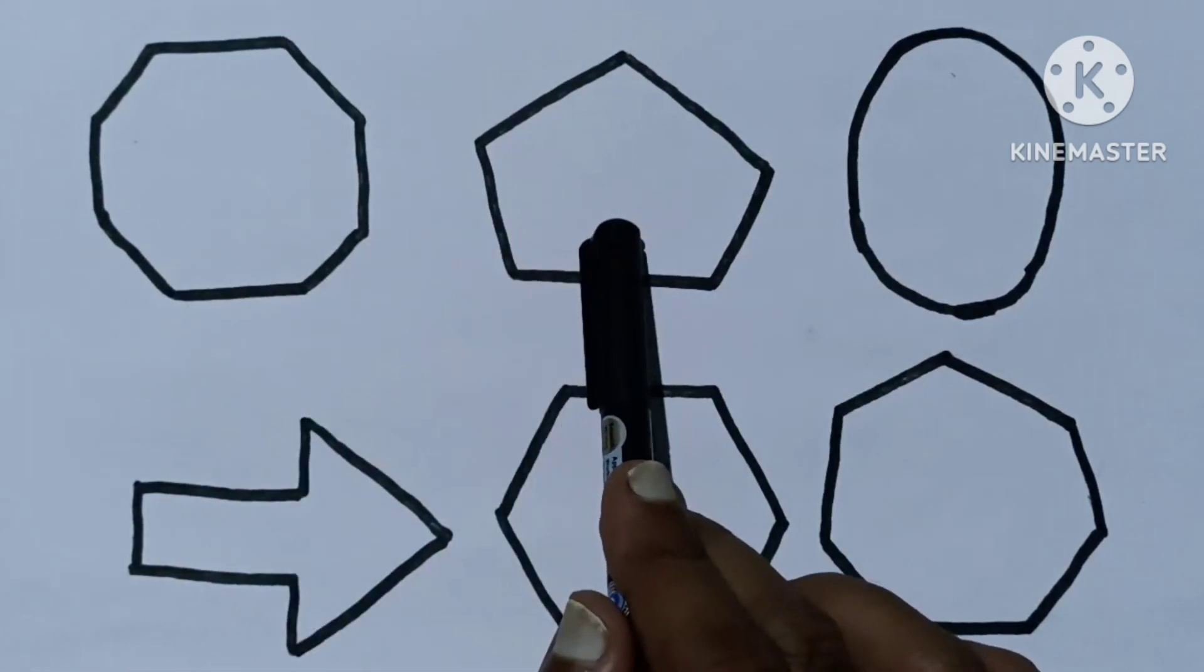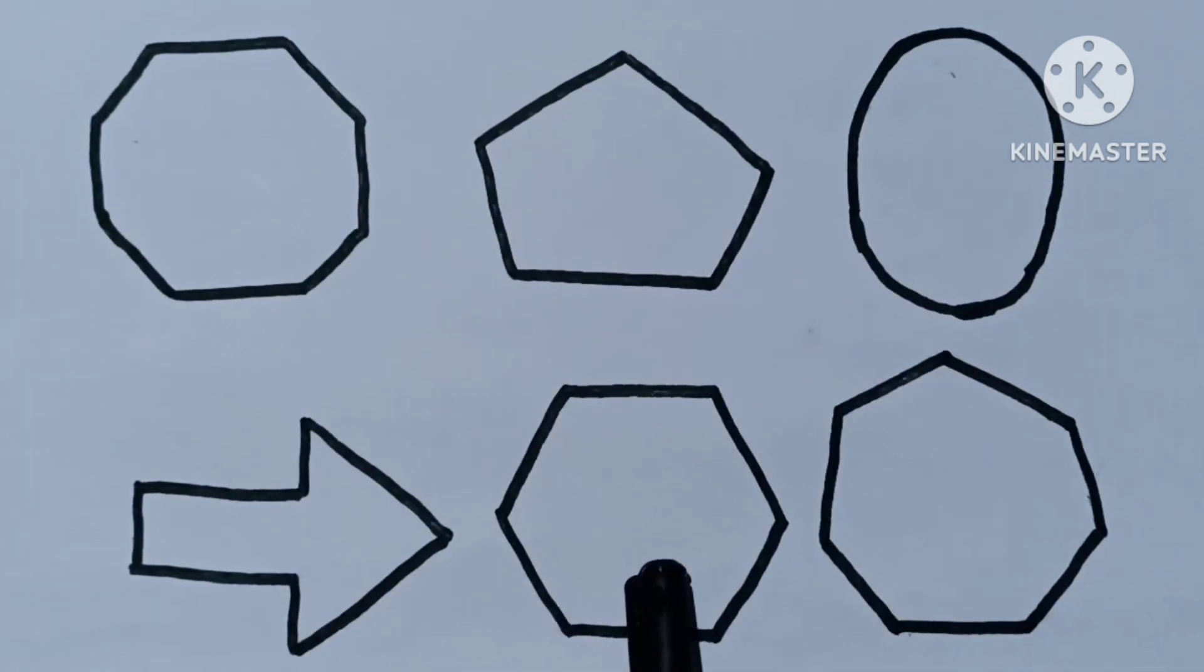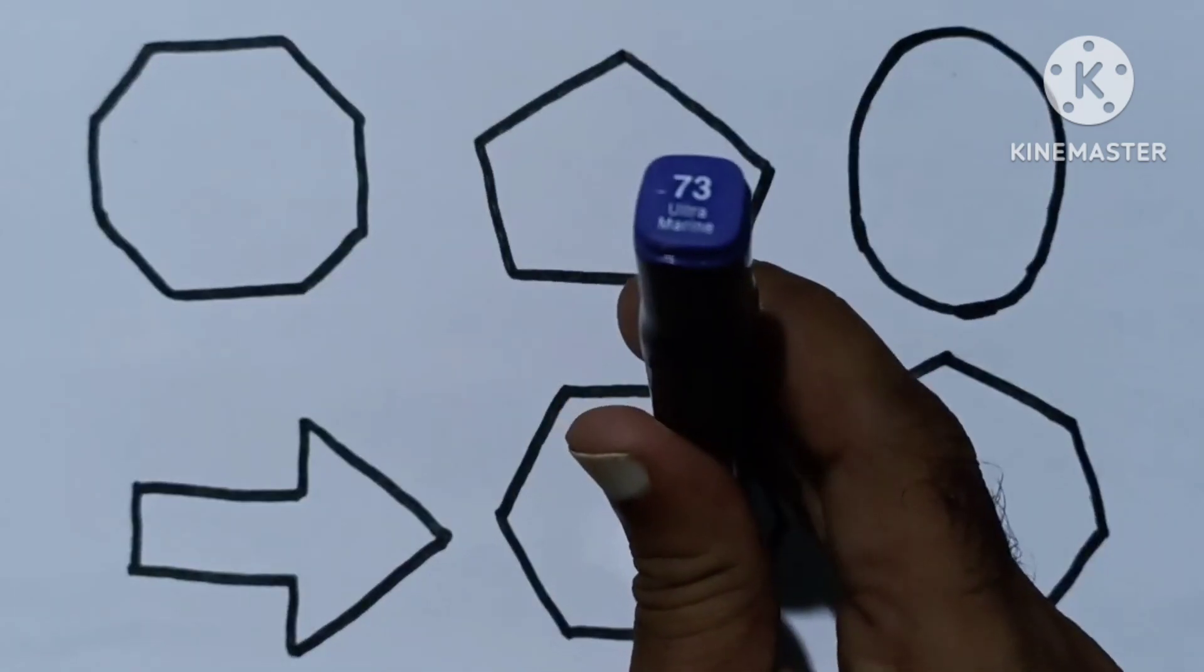Octagon, pentagon, oval, arrow, hexagon, heptagon. Ultramarine color.